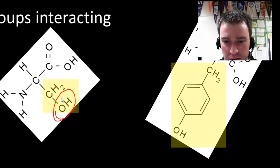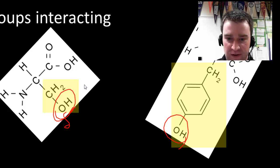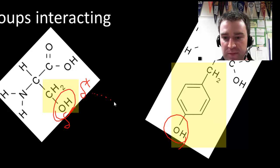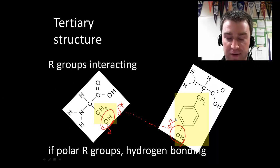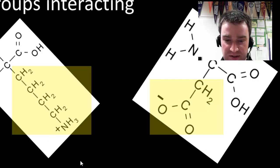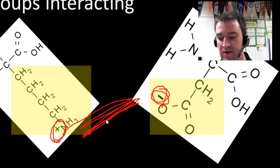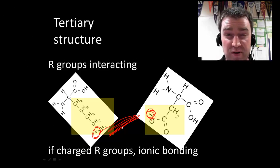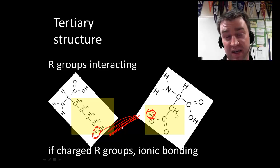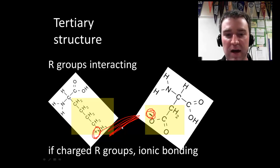A second type of R group interaction involves polar R groups — certain amino acids have OH groups that create a separation of charge, so partial positives link up with partial negatives to form hydrogen bonds. A third type: sometimes R groups have full charges, not just partial charges, and if opposite full charges come together they can form very strong ionic bonds. Your book also briefly mentions a disulfide bridge — a special case between two cysteine amino acids, which is a very strong covalent bond — but you don't need to know the details.